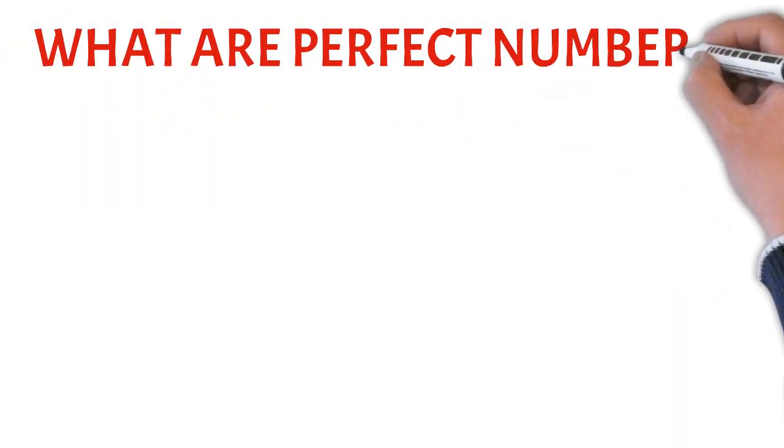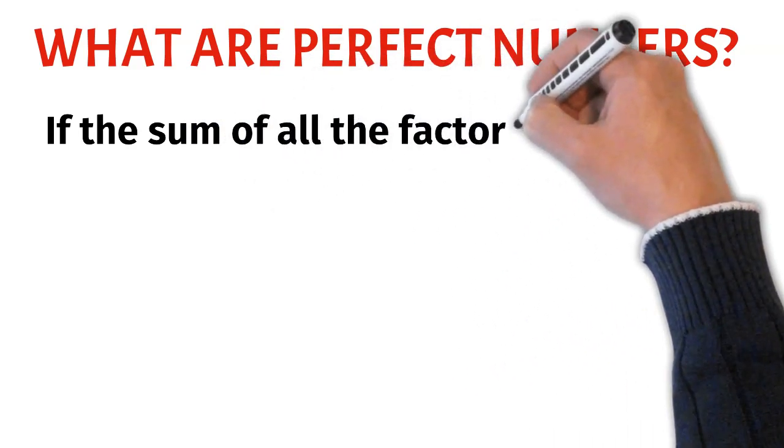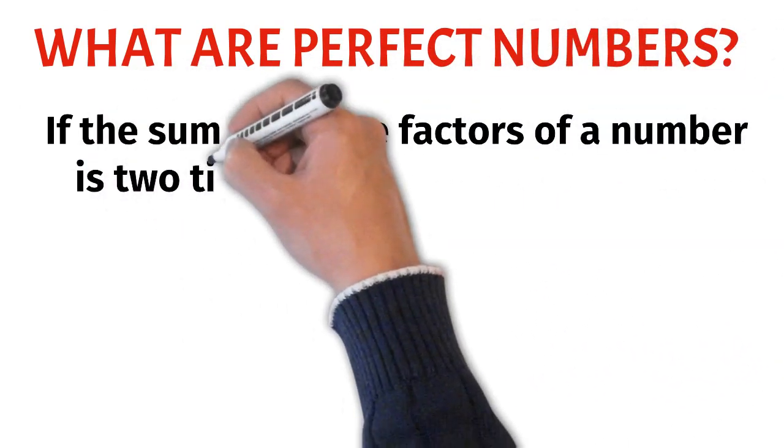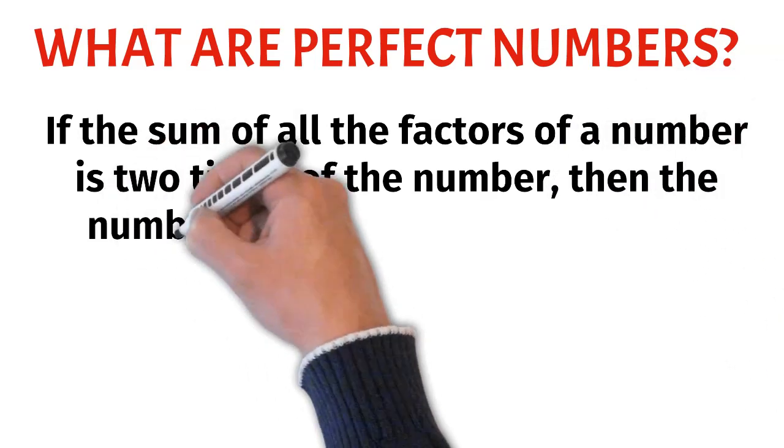What are perfect numbers? If the sum of all the factors of a number is two times the number, then the number is called a perfect number.